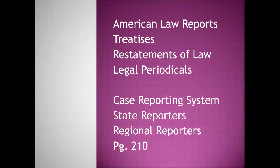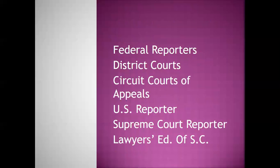Remember, these cases are only the appellate cases — trial courts usually do not write an opinion. The structure of our court system includes the District Court of Appeals and then the Supreme Court in each state. There are also federal reporters that report all of the courts in the federal system, including the trial courts. District court judges write opinions, so they are reported in the federal reporters. The Circuit Court of Appeals is the intermediate appellate court, organized geographically throughout the United States.